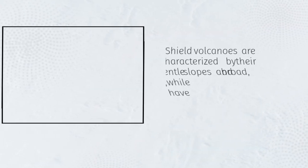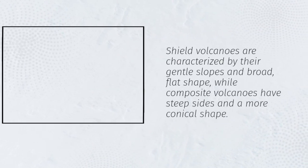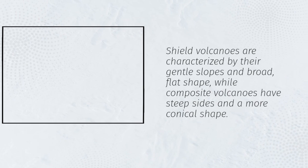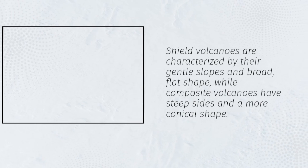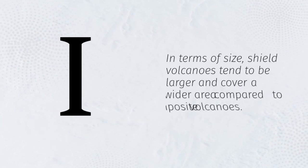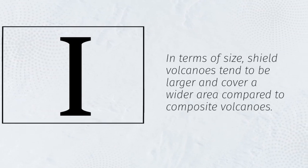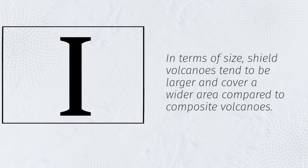Shield volcanoes are characterized by their gentle slopes and broad, flat shape, while composite volcanoes have steep sides and a more conical shape. In terms of size, shield volcanoes tend to be larger and cover a wider area compared to composite volcanoes.